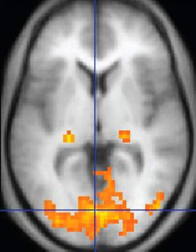Each tissue returns to its equilibrium state after excitation by the independent relaxation processes of T1, that is, magnetization in the same direction as the static magnetic field, and T2, transverse to the static magnetic field. To create a T1-weighted image, magnetization is allowed to recover before measuring the MR signal by changing the repetition time. This image weighting is useful for assessing the cerebral cortex, identifying fatty tissue, characterizing focal liver lesions and in general for obtaining morphological information.